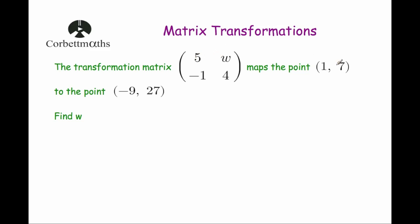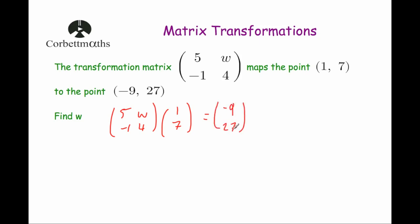We know that multiplying this matrix by the point gives the answer. So: 5, w, minus 1, 4 times (1, 7) equals (−9, 27). Multiplying the first row by the column: 5 times 1 is 5, plus w times 7 is 7w, and that equals minus 9. Taking away 5 from both sides: 7w equals minus 14. Dividing by 7: w equals minus 2.